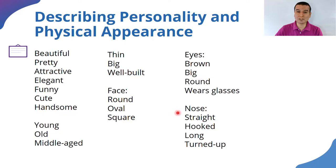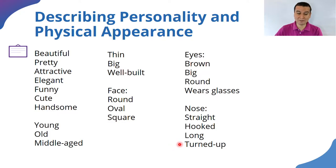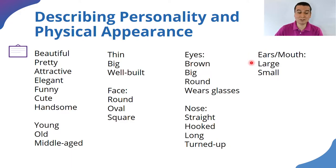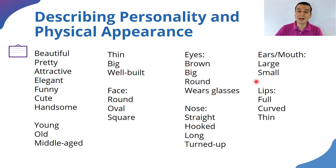To describe a person's nose, we could say they have a straight nose, hooked nose, long nose, or turned-up nose. For the ears or mouth, we can refer to size — large ears, large mouth, small ears, small mouth. For the lips, we could say the person has full lips, curved lips, or thin lips.